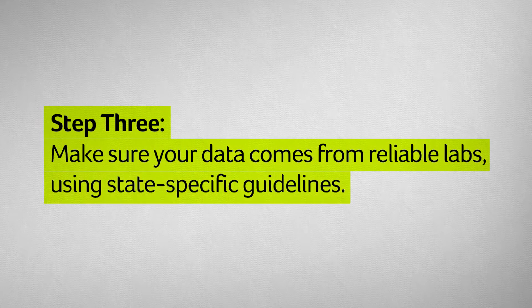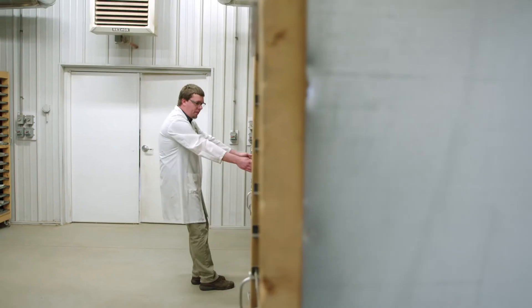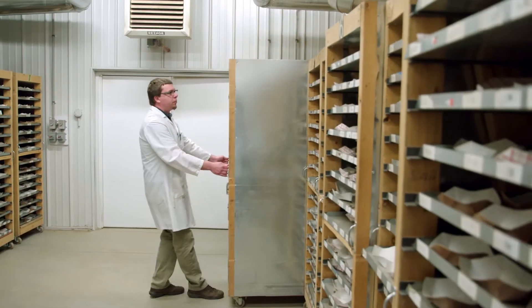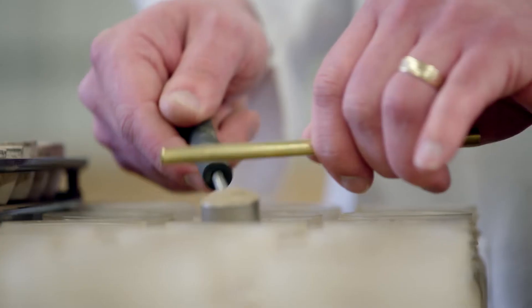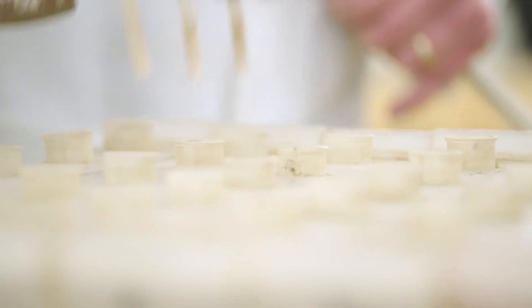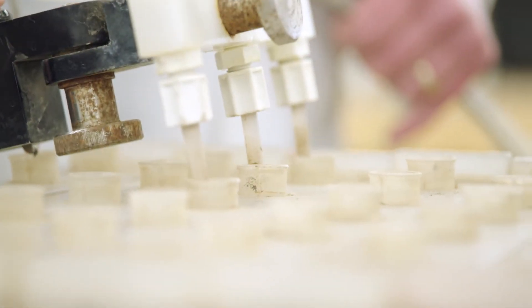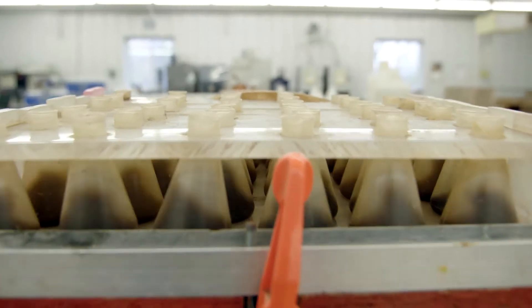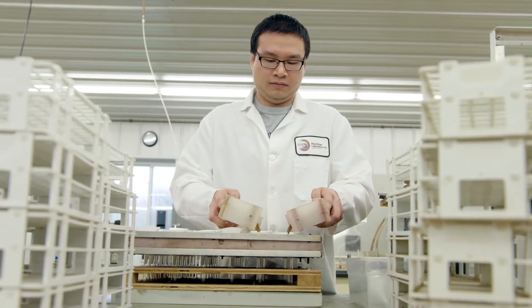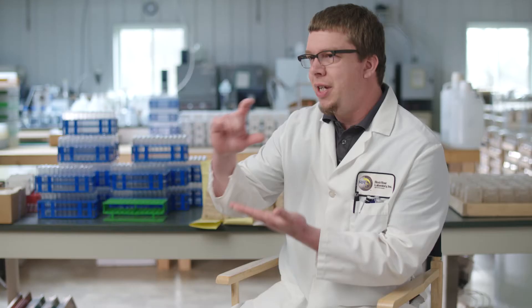Another component to getting the right data with your soil testing is to use a qualified lab. There's actually a lot more to soil testing than a lot of people think. First we dry the sample, then we have to grind it to a fine powder to about two millimeters in size. We'll mix that sample with an extracting solution, shake it for about five minutes, then we filter out the soil — and what we're left with is a test tube full of liquid that has all of the plant available nutrients in it.